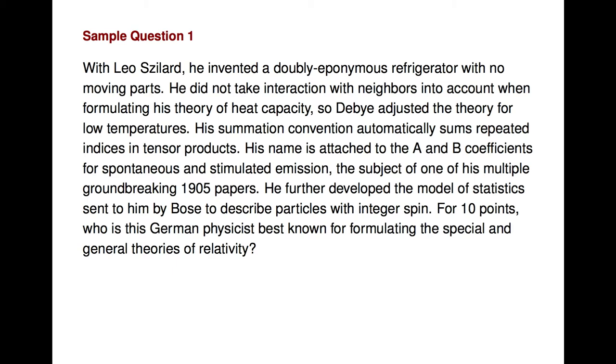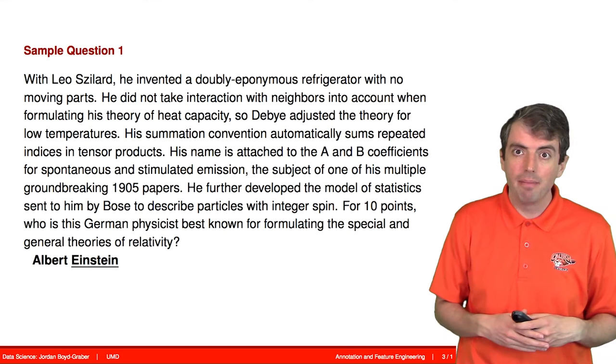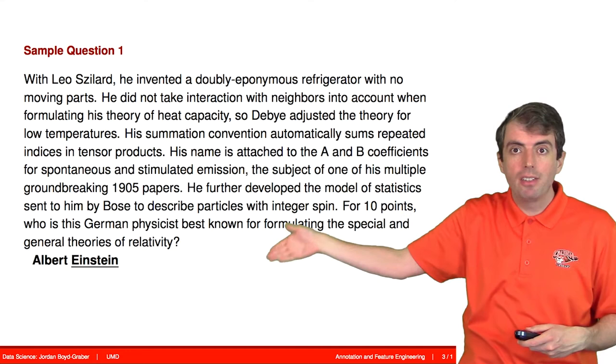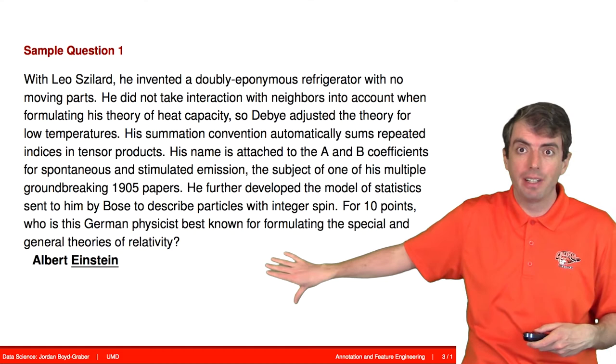So hopefully, by the end of the question, you can recognize that the answer is Albert Einstein. The question is structured so that the hard stuff is at the beginning, and as you go deeper and deeper into the question, it gets easier and easier as you go. So once you get to the end, you're talking about special and general theories of relativity, which is what everybody should know about Einstein.